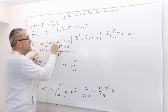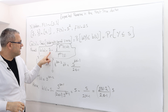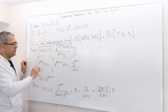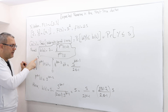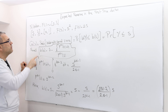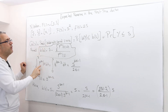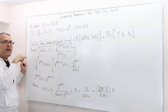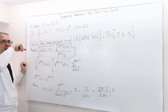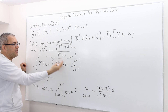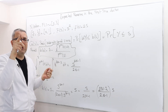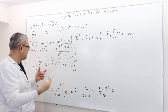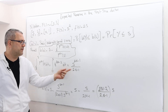The symmetric bidding function in the first price auction is: b(s) = s minus the integral from s-lower-bar to s of F^(n-1)(t) dt, divided by F^(n-1)(s). Here s-lower-bar is 0. Since F(t) = t², we have F^(n-1)(t) = t^(2(n-1)) = t^(2n-2). So the integral from 0 to s of t^(2n-2) dt equals s^(2n-1) divided by (2n-1).